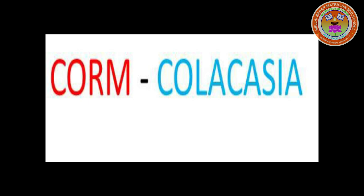Corm. This condensed form of stem grows in the vertical direction. It is spherical in shape with a flattened base. It has distinct nodes and internodes. Adventitious roots are present either at the base or all over the body. The axillary buds are present on the side. Example: Colocasia.